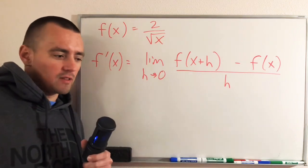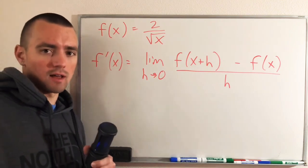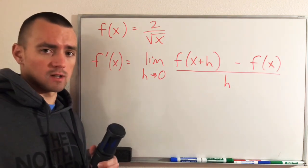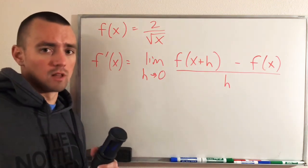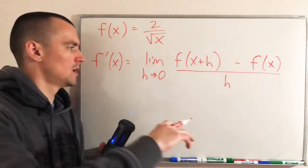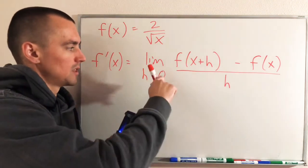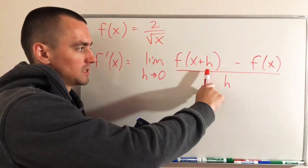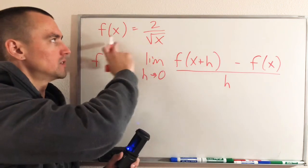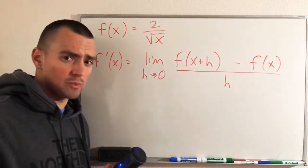Hey guys, Jake here coming at you with another math lesson today. Here's the problem we're going to be doing today. I'm going to be continuing on just like I did last week with a video about finding the derivative of a function that has square roots in it using the limit definition of a derivative. So that limit definition is basically this formula here. It essentially says that the derivative of your function f is just going to be the limit as h goes to zero of f(x+h) minus f(x) all over h. And the function that we're going to be finding the derivative of is f(x) equals 2 divided by the square root of x. So let's jump into it.